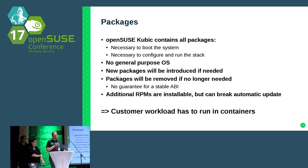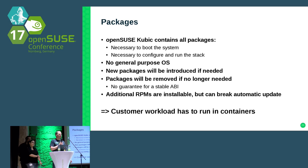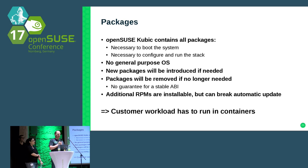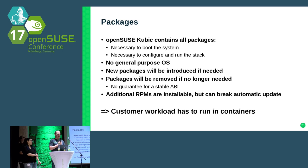Which packages does OpenSUSE Kubic contain? It contains all packages needed to boot the system and configure and run the stack on top — Kubernetes, Docker engine, and whatever is needed. But it is not a general purpose OS. Logging on to the console to store games, for example, is not the way to go. Your workloads must run inside a container. New packages will be introduced if needed; packages no longer needed will be removed. We don't guarantee any ABI for your application — that's why you put your workload in a container.